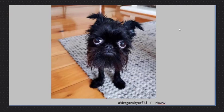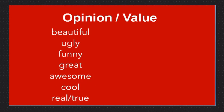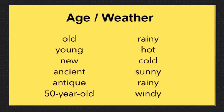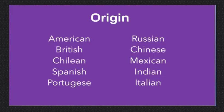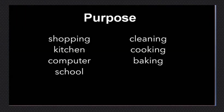Alright, so let's look at some examples. We see a dog. Remember, these are our adjectives: quantity, opinion, size, age or weather, shape, color, origin, material, and purpose. Interesting — cleaning. Dirtying. Great.